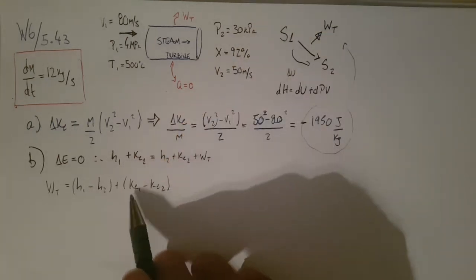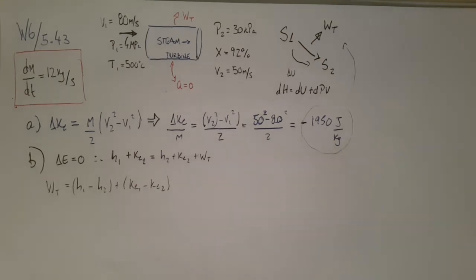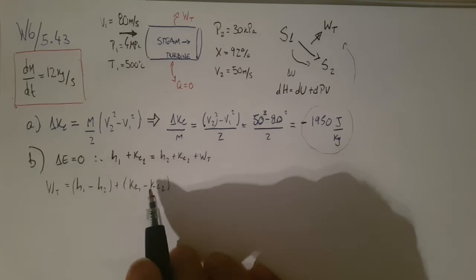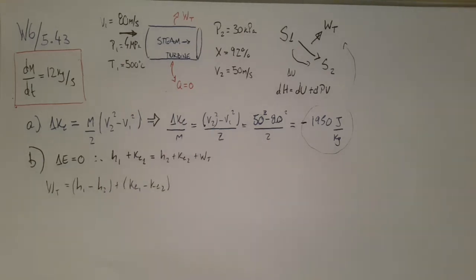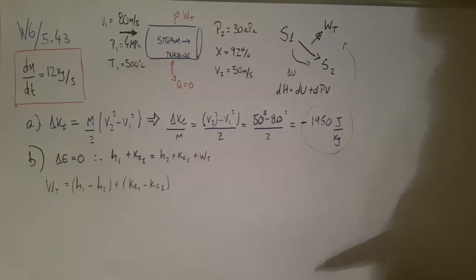We already have this. We just calculated it. We just need to find this. Just don't forget that to be able to sum these two guys, they need to be in the same unit, right? Or else we're making a big mistake. Okay, so what we need to do now is find the two enthalpies, enthalpy 1 and enthalpy 2.